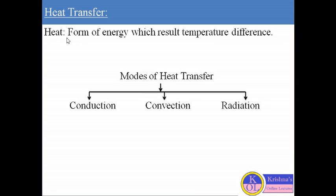We can define heat as basically a form of energy which results in a temperature difference across the boundary of a system. We can also say heat is the amount of energy flowing from one body of matter to another body due to temperature difference or by any other means. Basically, heat always flows from higher temperature to lower temperature — from a hot body to a cold body.